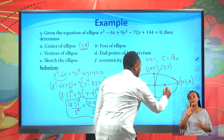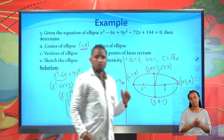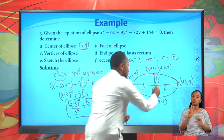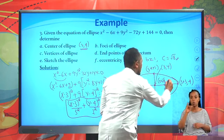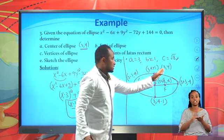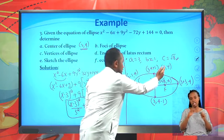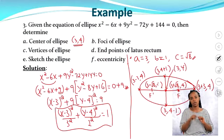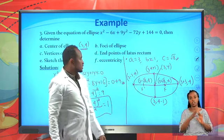For the foci, move c = √8 units left and right from center (3, 4) along the horizontal direction. One focus is at (3 + √8, 4) and the other is at (3 − √8, 4).